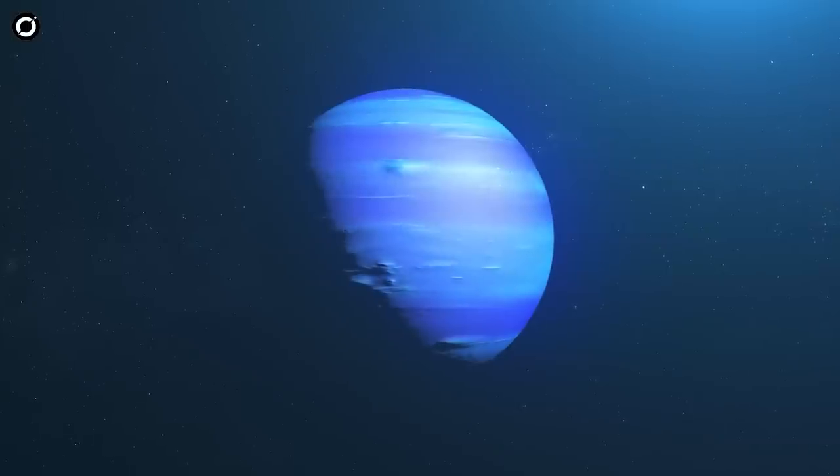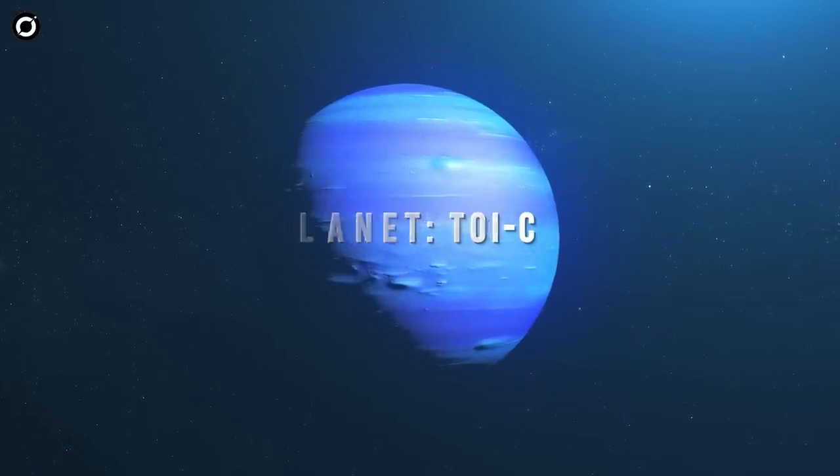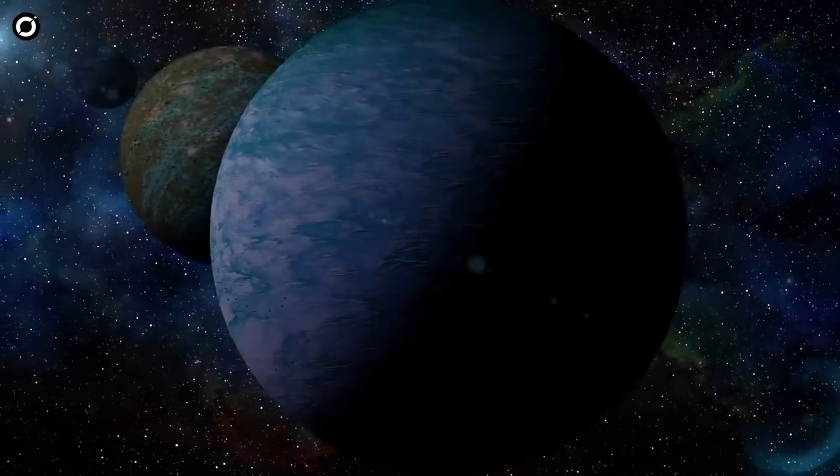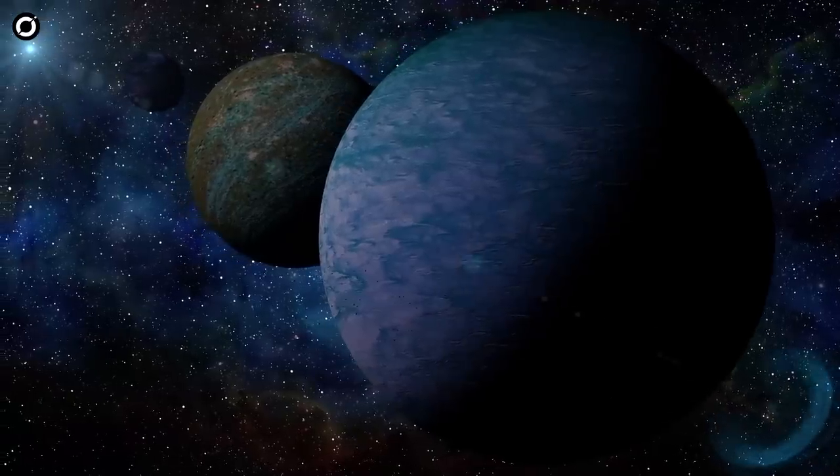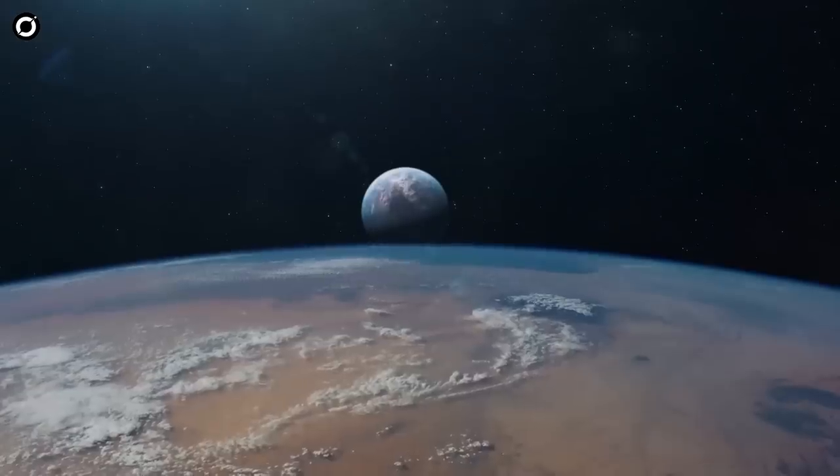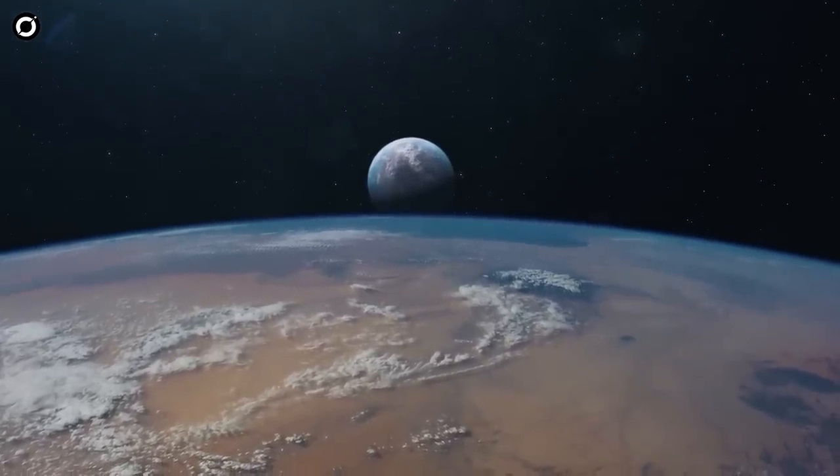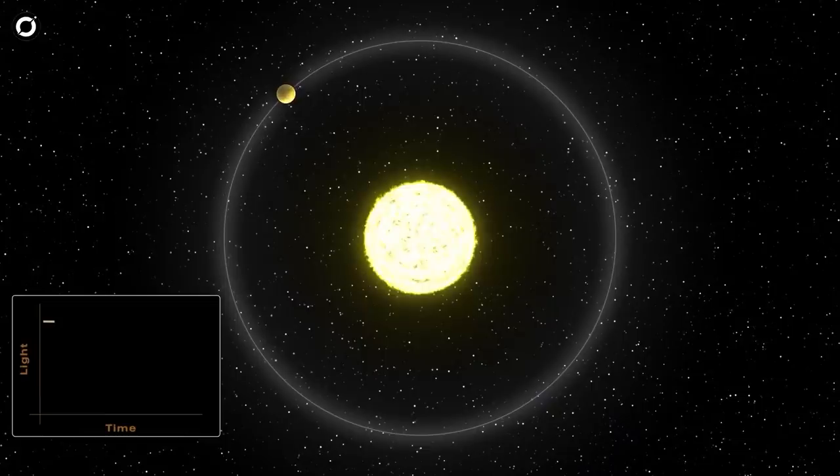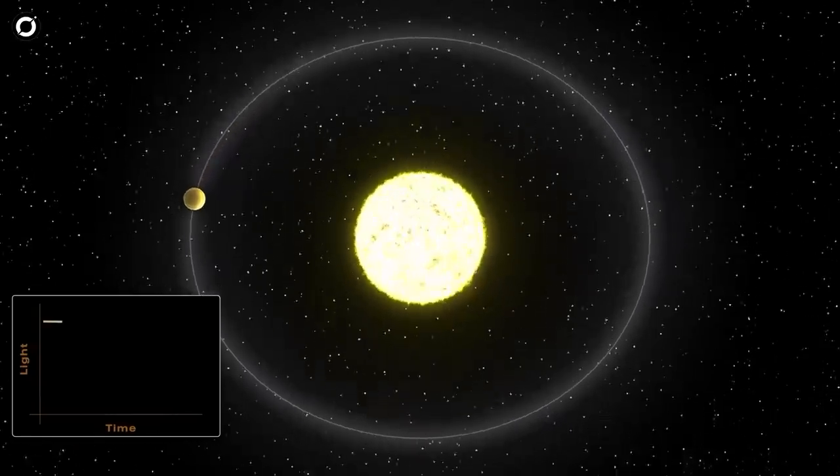Scientists believe that apart from the newly discovered TOI e, the planet d also might be habitable. This makes it one of the few star systems with more than one planet in its habitable zone. Interestingly, TOI e takes 28 days to orbit its star, and further studies might reveal its chemical composition.